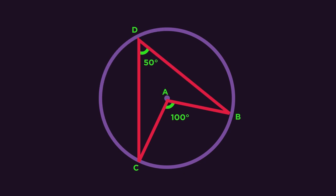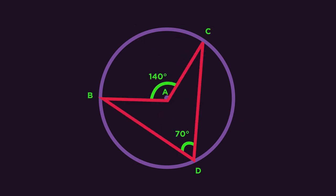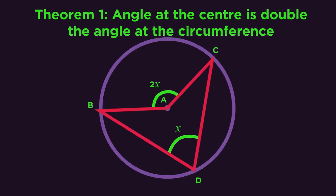Here's the first one. What's the connection between the two angles? Hopefully you can see that the angle at the centre is double the angle at the circumference. That's the first theorem.